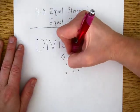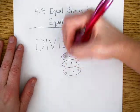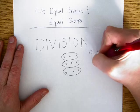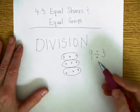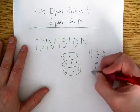And what we do is, let's just say we want to break it into 3 equal groups. That's like saying 9 divided by 3. And this mark means divided by.